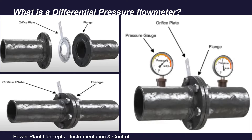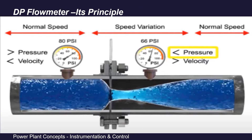The working principle has quite old history. In the 18th century, Daniel Bernoulli discovered that the pressure and velocity of a fluid are inversely proportional to each other — as the speed of a moving fluid increases, the pressure within the fluid decreases, and vice versa. This principle gave the idea of measuring fluid flow rate by using the differential pressure created by the flowing fluid across a flow restriction in the pipeline.